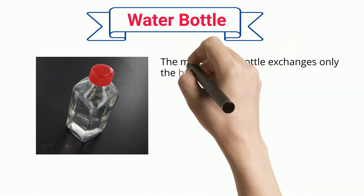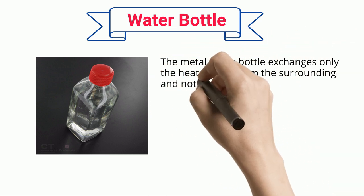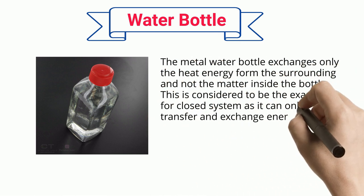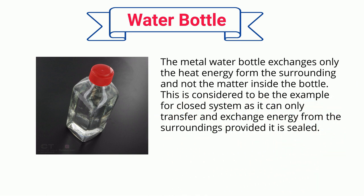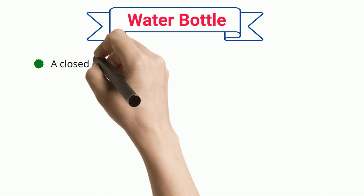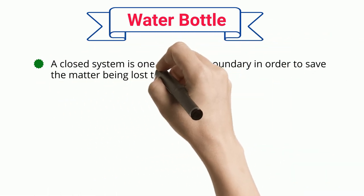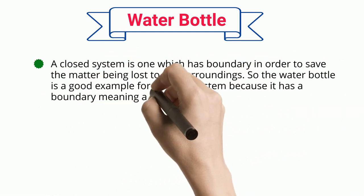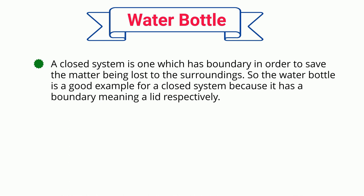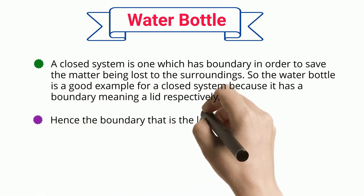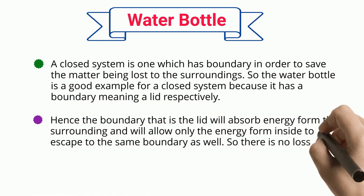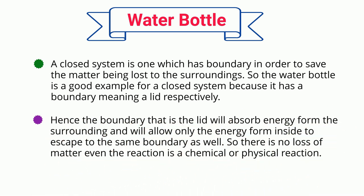The metal water bottle exchanges only heat energy with the surroundings and not the matter inside the bottle. It is considered an example of a closed system as it can only transfer and exchange energy from the surroundings, provided it is sealed. A closed system has a boundary in order to prevent matter from being lost to the surroundings, so the water bottle's lid acts as that boundary, absorbing energy from the surrounding while allowing only energy to escape. There is no loss of matter whether the reaction is chemical or physical.